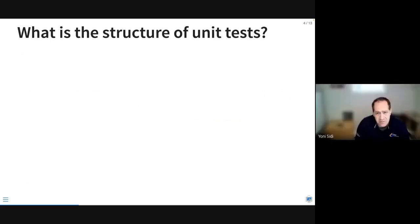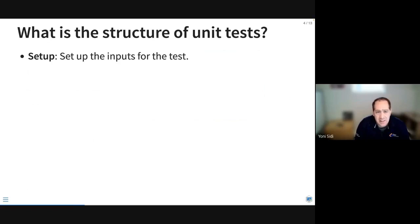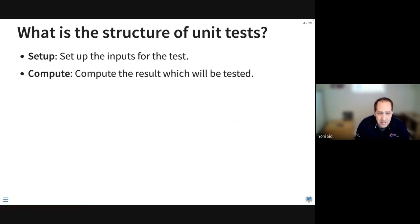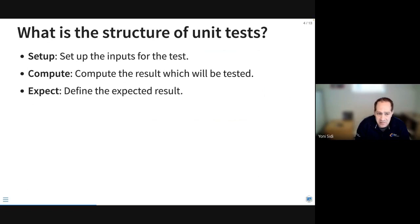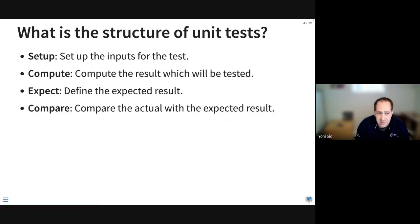What is the structure of a unit test? First, we set up the unit test — we need to have all the inputs for the test ready before the test actually runs. Then we compute the results which will be tested. After that, we define the expected results to match against the computed outputs, and then we compare the actual with the expected result to see that they match.